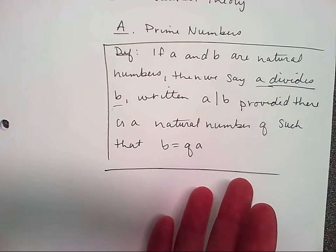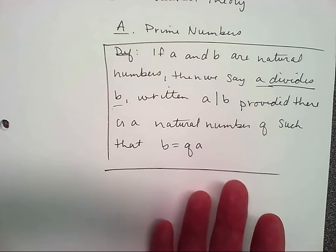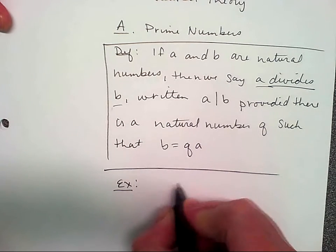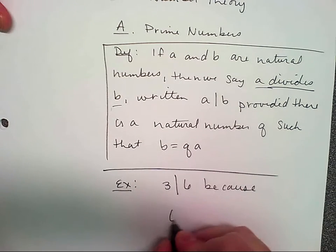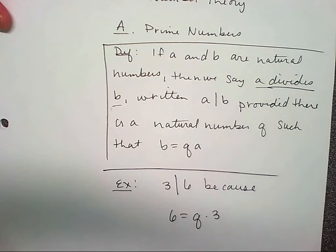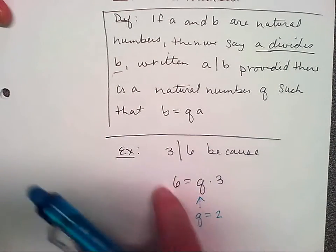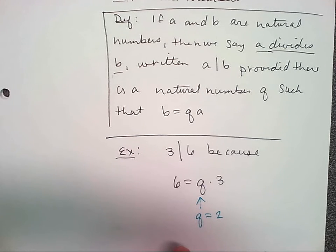If you're using those phrases in problems and don't know what they are, you should ask. Don't just take it for granted. Three divides six because six equals Q times three — Q is clearly two. There exists a natural number Q such that this works. Q is not one half; these are all whole numbers.